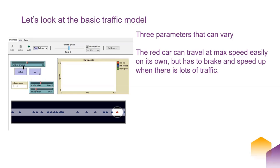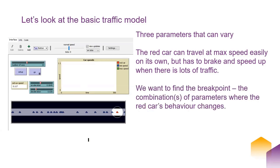This model highlights one agent in a red car — all the other cars are blue. It tracks the red car's speed, but also the slowest speed, the max speed, all the various speeds of the cars. What we're trying to find in experiments like this is the break point in behavior — the set of parameters or combinations where the red car's behavior changes. When it's on its own it can go max speed continuously, but when there's traffic it has to accelerate and brake. How much traffic is too much? How much acceleration and deceleration are too much?